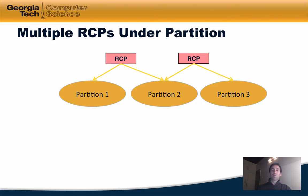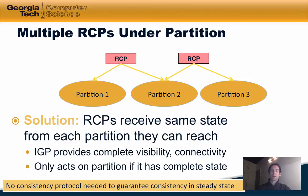Now suppose we have multiple replicated RCPs and the network itself has multiple partitions. Some partitions may be reachable by both RCPs while others are reachable only by one. The approach is to ensure that the RCPs receive the same state from each partition they can reach. The IGP provides complete visibility and connectivity for each partition, and if an RCP only acts on a partition when it has complete state for that partition, then the routes it assigns will be consistent—meaning no forwarding loops.